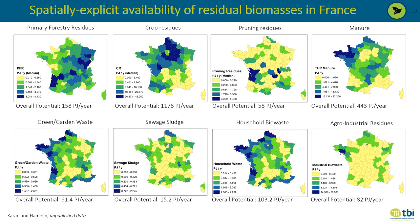This slide shows maps for the availability of different residual streams at the French departmental or European NUTS level. Crop residues held the largest share with about 1178 PJ per year, followed by manure at about 443 PJ per year, and primary forestry residues at about 158 PJ per year. We acknowledge institutions that helped with data, particularly the Institute Paris Region for household biowaste, DECO from the Occitania region, and other regional waste observatories.